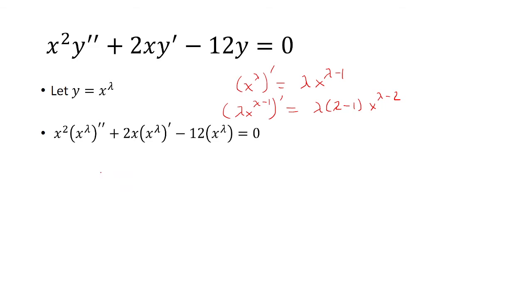And so we can replace that into the equation. And notice that we have x squared times x to lambda minus 2. That's just going to be x to lambda. And then x times x to lambda minus 1 is also x to lambda.